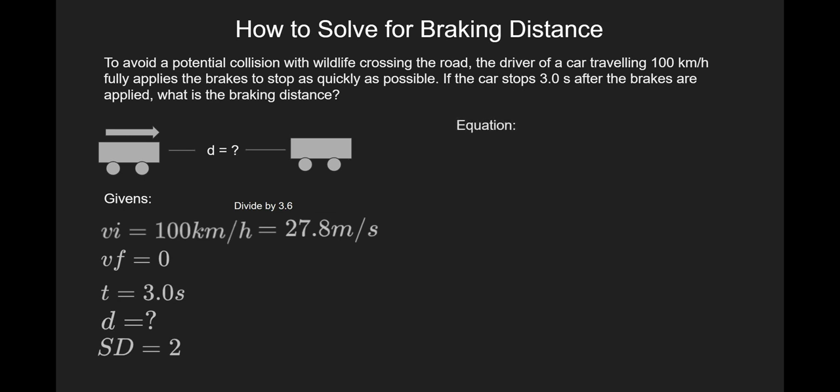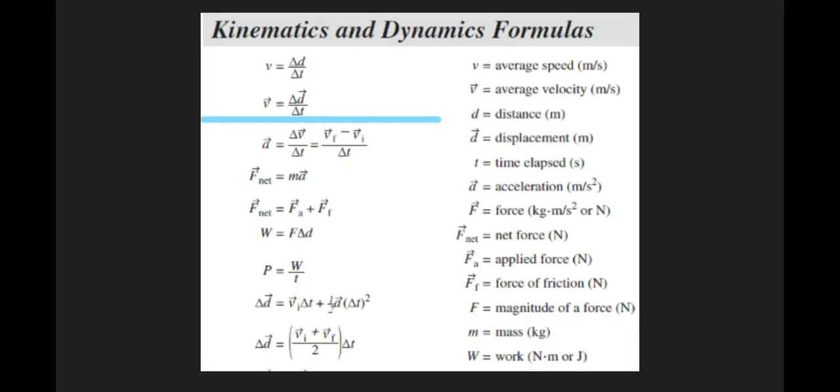Now that we have all of our givens, it's time to find our equation. For this, we want to look in our data booklet and look at our physics equations. If we take a look there, you'll notice the top two equations above the blue line—those only work when there's no acceleration, so those are for uniform motion only. If we have acceleration involved, we need to pick an equation from below the blue line.